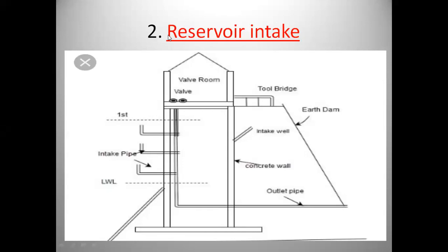The second type of intake is reservoir intake, constructed at the reservoir. The reservoir intake has three intake pipes because the water level in the reservoir changes gradually. At the valve room, valves are provided to control the flow of water in the intake pipes. A concrete valve tower is constructed for the reservoir intake. A foot bridge or tool bridge is used to access the valve room to control the valves. An intake well is constructed to intake the water, and from the outlet pipe, water from the reservoir intake goes to the water treatment plant.